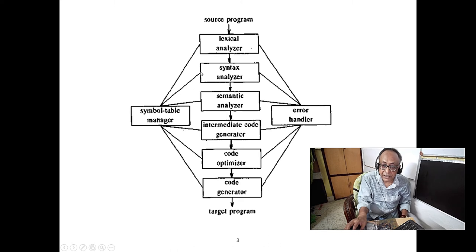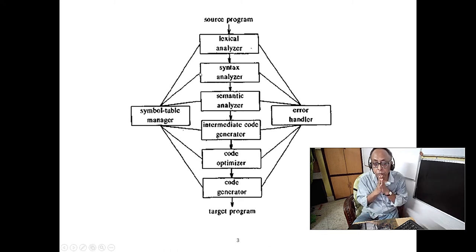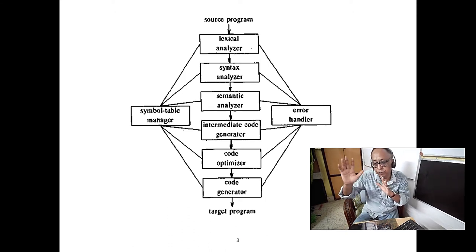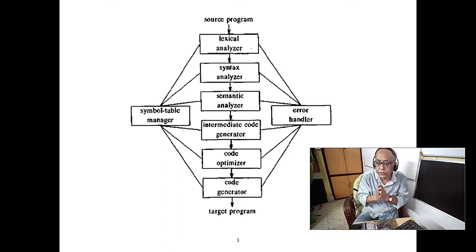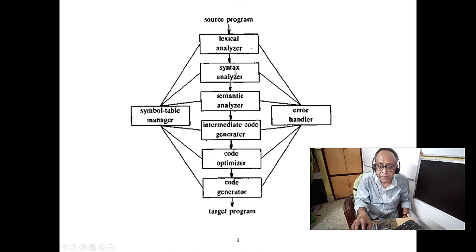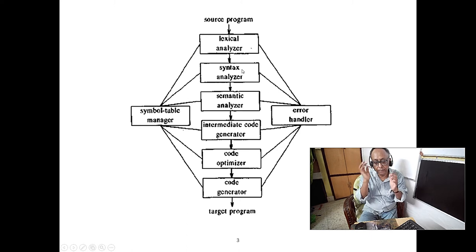Top-down parsing looks easier for humans, but computers are different. Computers can do certain repetitive jobs at a much faster rate. Computer scientists have found that bottom-up parsing is very good for checking the legality of a program.